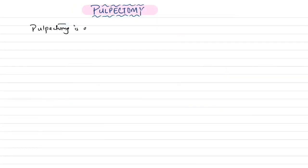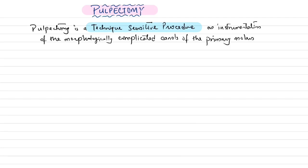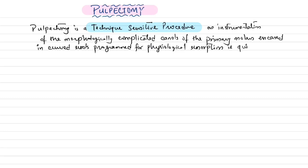Before describing the pulpectomy procedure, it is important to note that pulpectomy is a technique-sensitive procedure. This is because instrumentation of the morphologically complicated canals of primary molars — encased in curved roots that are programmed for physiological resorption — is a challenging task.